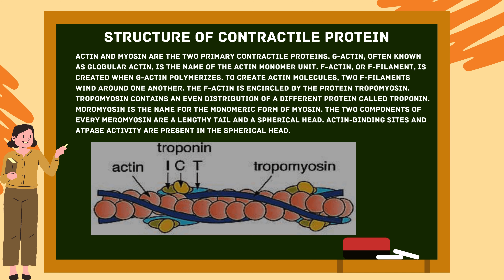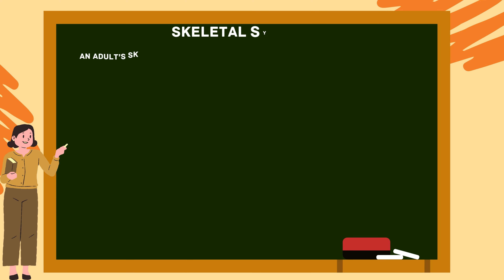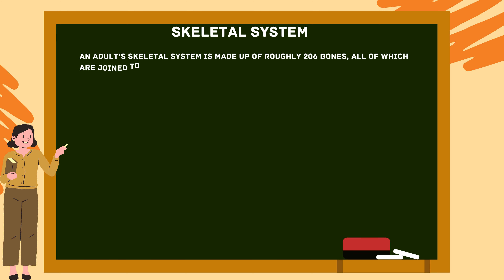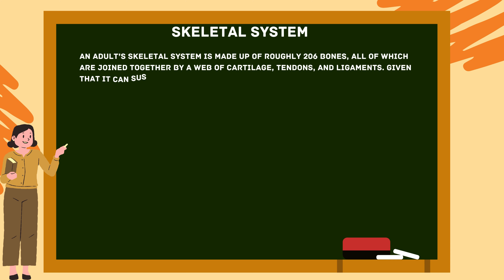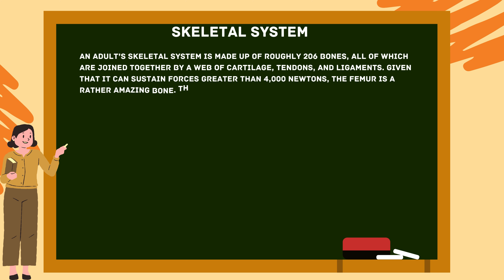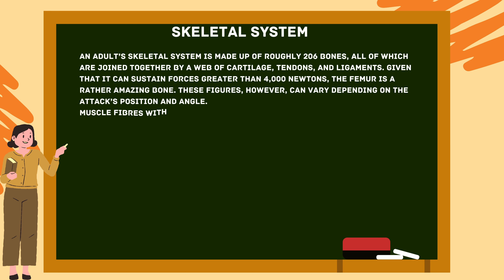The skeletal system: an adult skeletal system is made up of roughly 206 bones, all joined together by a web of cartilage, tendons, and ligaments. The femur is a remarkable bone, capable of sustaining forces greater than 4000 newtons, though these figures can vary depending on the position and angle.